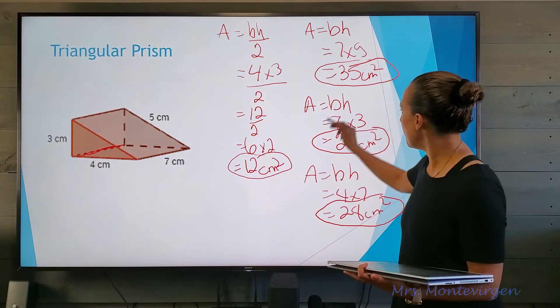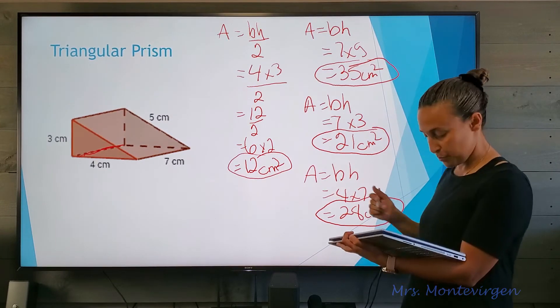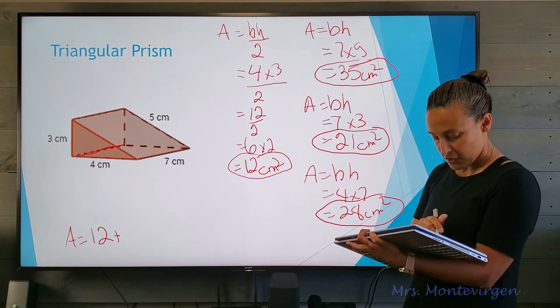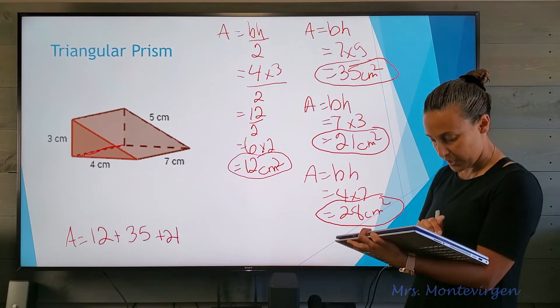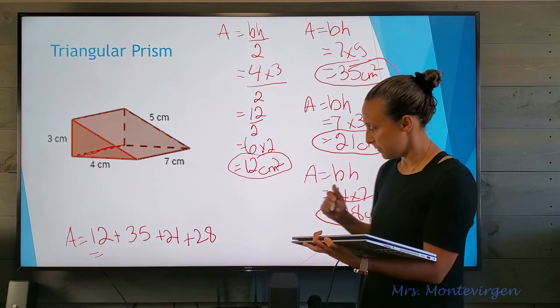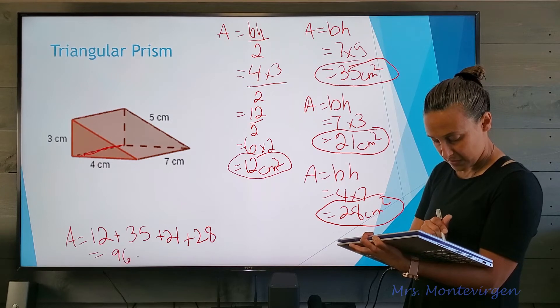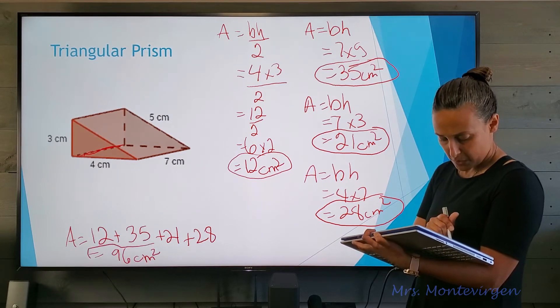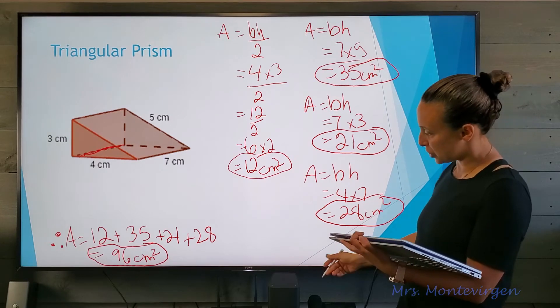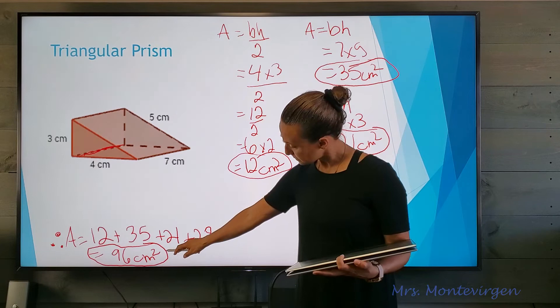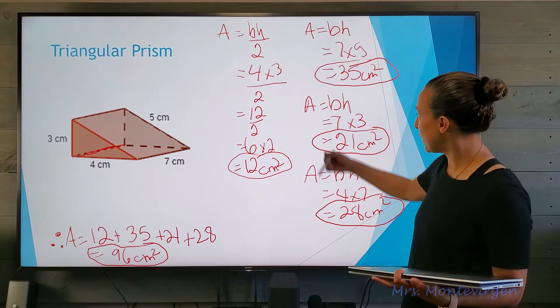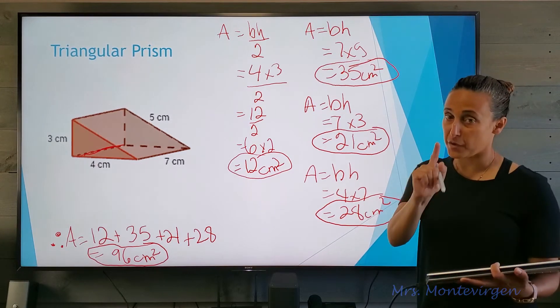All I have to do is bring them forward. I'm going to put this at the bottom here: twelve plus thirty-five plus twenty-one plus twenty-eight. This is a matter of simply adding those up, and that will be ninety-six square centimeters. Some people like to put that therefore sign that shows you're dealing with the final solution. My final answer for the surface area of this triangular prism is ninety-six square centimeters.